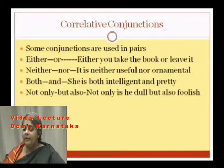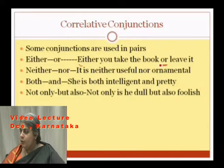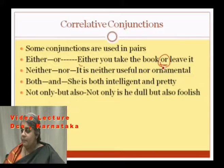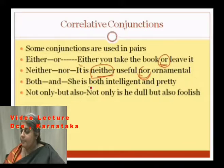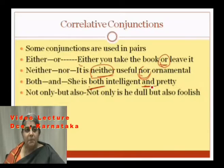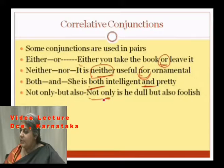Correlative conjunctions come in pairs. Examples: 'Either or' — 'Either you take the book or leave it.' 'Neither nor' — 'It is neither useful nor ornamental.' 'Both and' — 'She is both intelligent and pretty.' 'Not only but also' — these are conjunctions used in pairs.